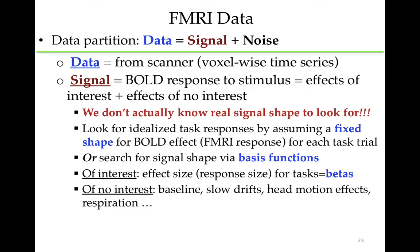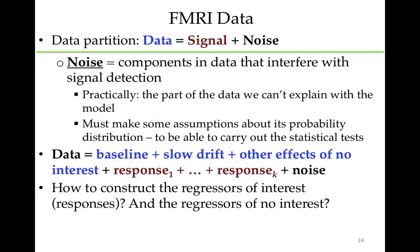There are different ways to do this. The responses we look for can have a fixed shape — we just want to know how much of it, how much we need to fit this task trial. Or we can allow the shape to vary using a method called basis functions. In any case, what's of interest is the effect size for the task regressors — the task response models — and those are the betas. Of no interest are the baseline, the slow drifts, the head motion effects, respiration. These all affect the MRI signal and have to be modeled and then ignored. Noise is the part of the data that we can't explain with model components, and we have to make some assumptions about its probability distribution to carry out statistical tests on the betas of interest.